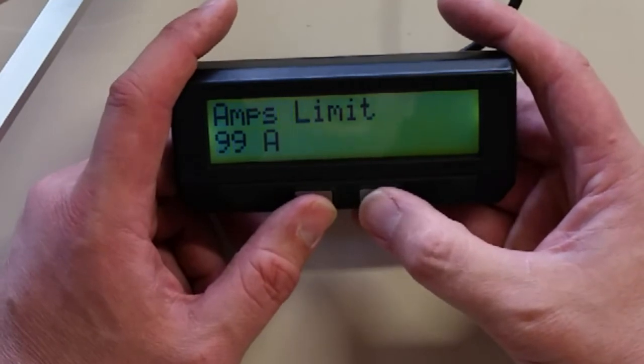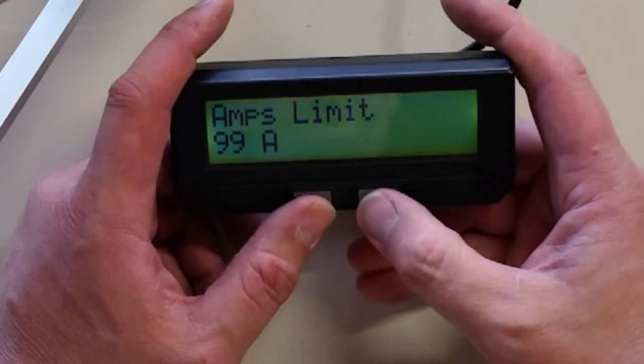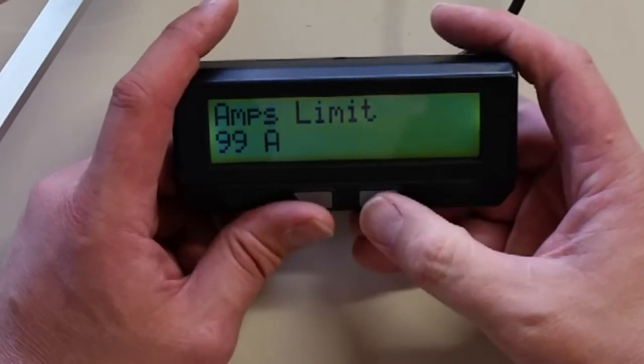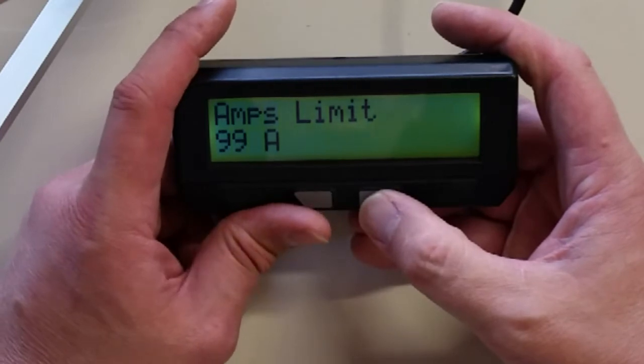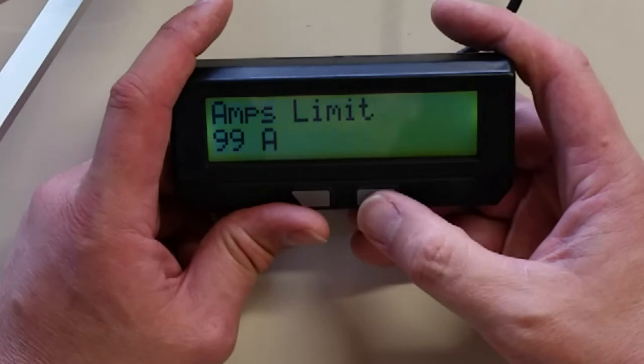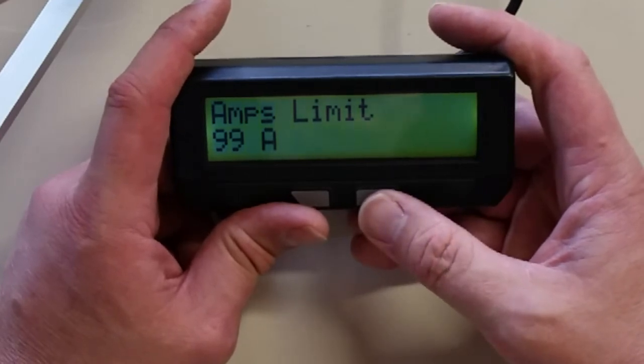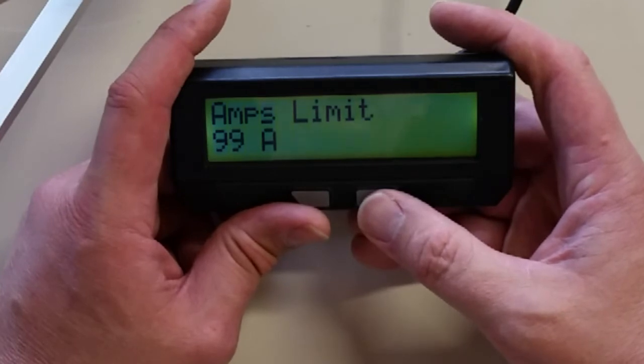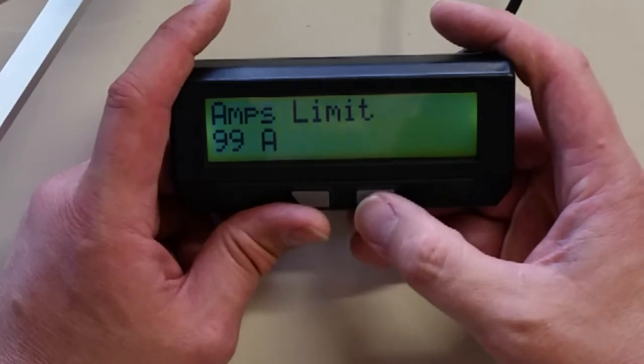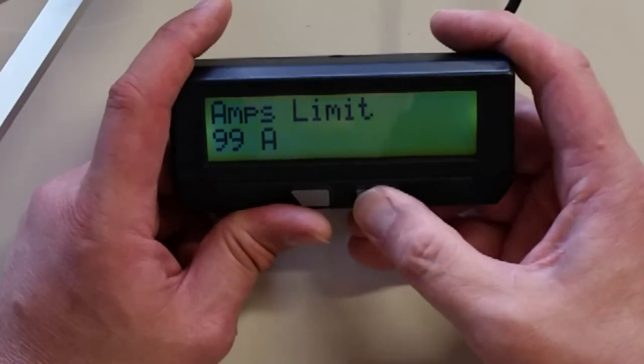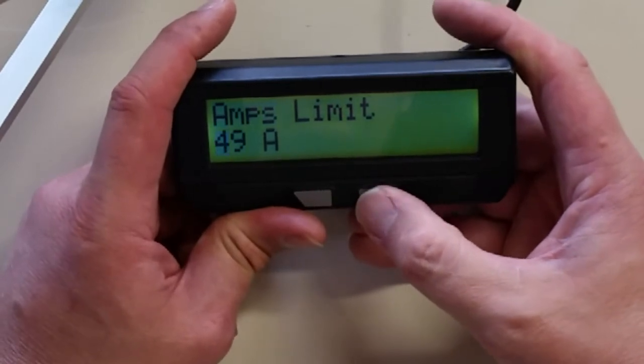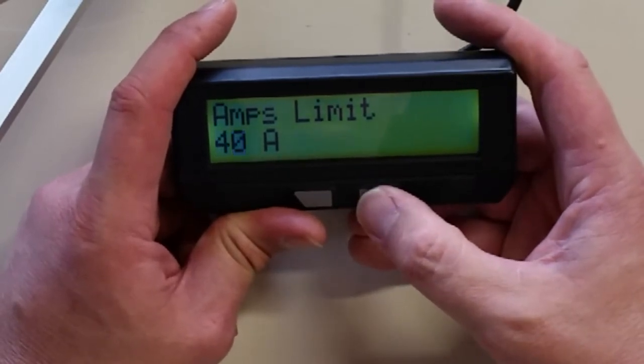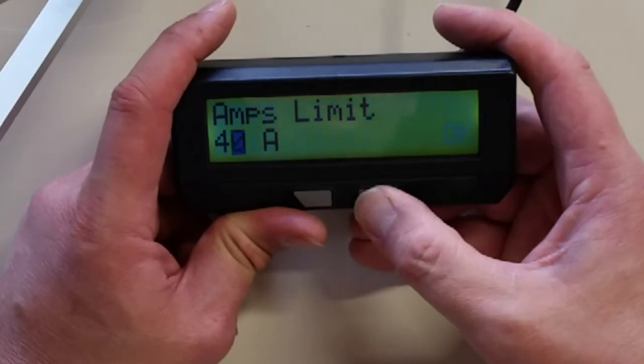Amps limit. Again this will be dependent on the controller and whatever you want to set it to. This is just setting the current limit of the whole system if your controller is capable. Some of our controllers go up to 100 amps. Then you can leave this high. If you want to restrict the amps, you can reduce it. Let's set ours to 40 amps. So go ahead and enter in here. So there's 4 and 0. 40 amps.